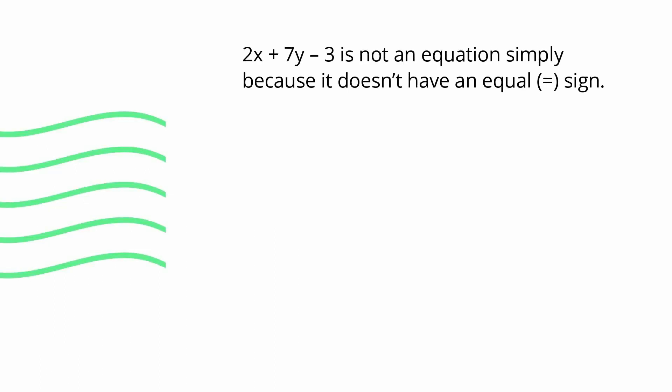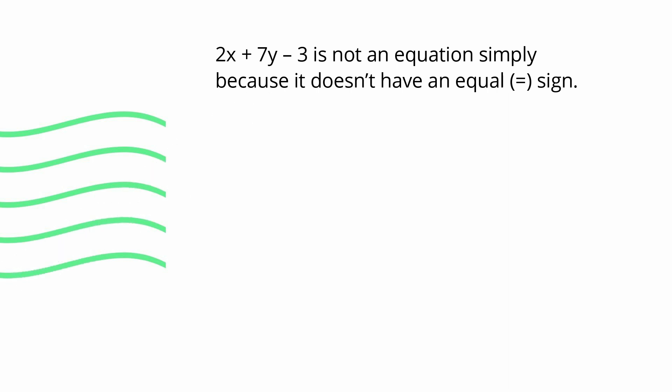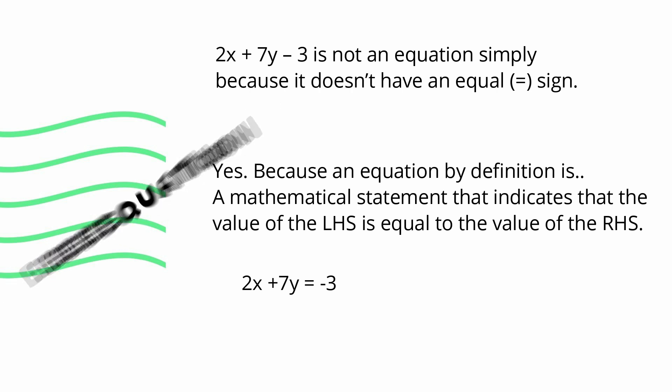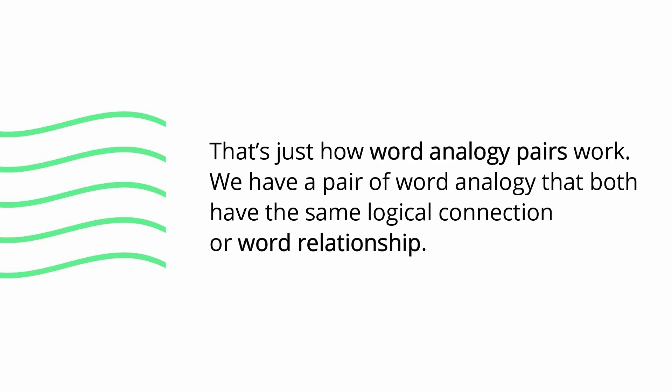2x plus 7y minus 3 is not an equation simply because it doesn't have an equal sign. Because an equation, by definition, is a mathematical statement that indicates that the value of the left-hand side is equal to the value of the right-hand side. Equals. Equation. That's just how word-analogy pairs work.